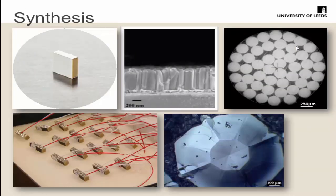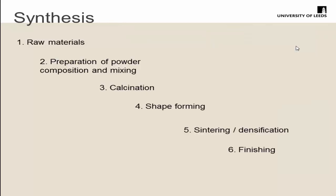Materials can come in a whole range of sizes and shapes: polycrystalline materials, thin films, composites, stacks, and single crystals — and we can make all of these at Leeds. I'm going to focus predominantly on the bulk polycrystalline materials used in this project. From taking raw materials through powder preparation, calcination, shape forming, sintering, and finishing.